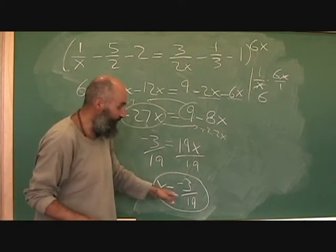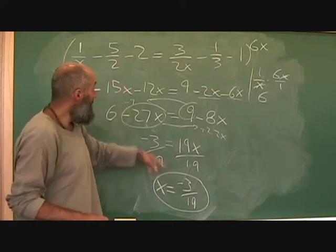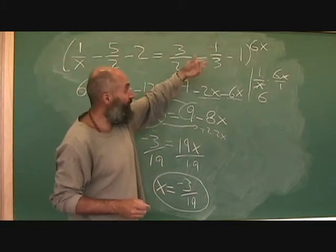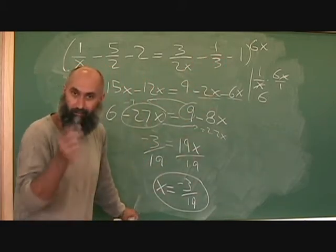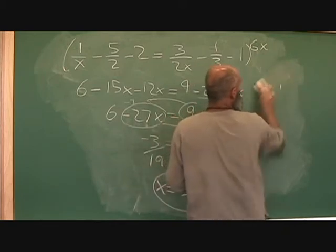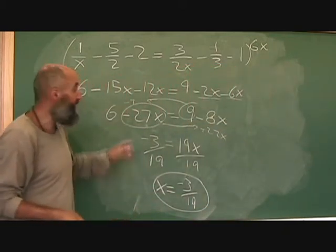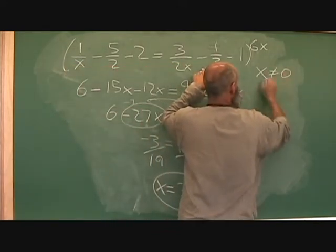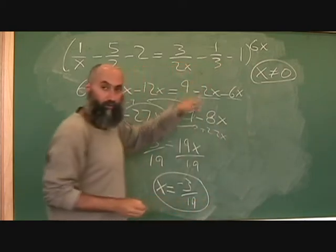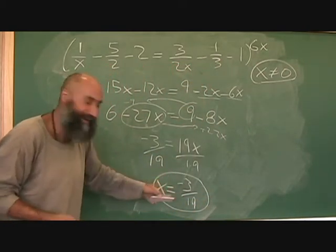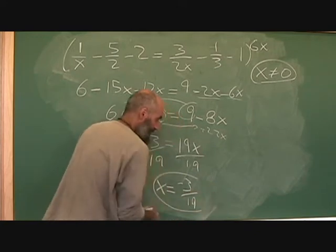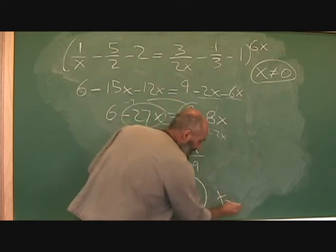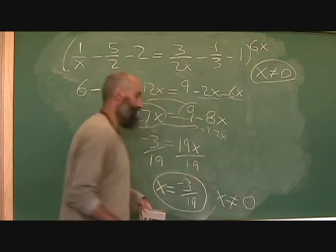Now, is that a valid solution? What you would have to do is plug it in to see if it works out to the left side of the equation and to the right side of the equation. And you would have to check your restrictions. Now, we didn't write down our restrictions. We should have done. So our restrictions here is x cannot equal 0. So x cannot equal 0. So when we write down our final answer, we're going to have to say x is equal to negative 3 over 19, and x cannot equal 0.